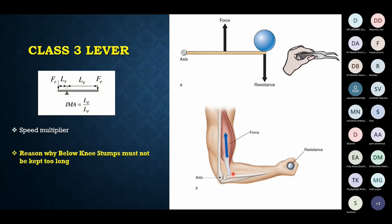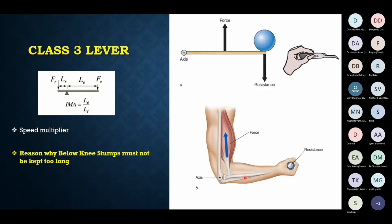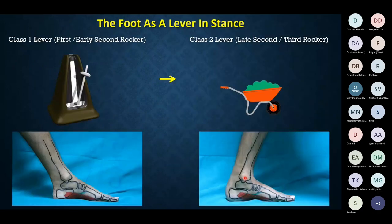An example of a class three lever in the body is the elbow joint, where the effort is closer to the joint and the load is farther away — a very inefficient lever. This is why below-knee stumps must not be kept too long: with the patellar tendon as the effort and knee joint as the fulcrum, the longer the load arm, the more difficult for the quadriceps to function.